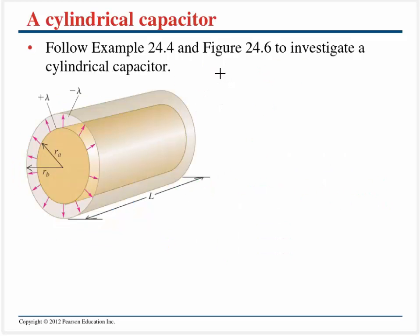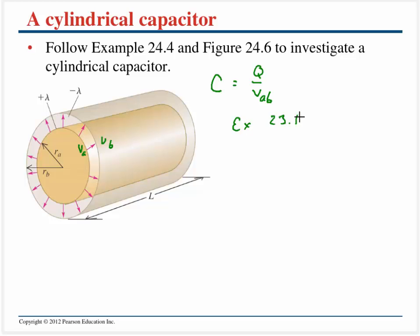For a cylindrical capacitor, it's pretty much the same setup. We write the capacitance as the charge divided by voltage VAB, and use example 23.10 to give us the voltage for a long cylinder, plug that in, and thus we have our capacitance. I'll leave the details up to you for this one.